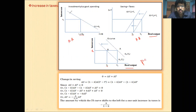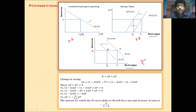This is the investment plus government expenditure curve. It is the locus of all those combinations of investment plus government expenditure and the rate of interest, combining points I0, Z0, and R0. This is the savings plus taxes curve.